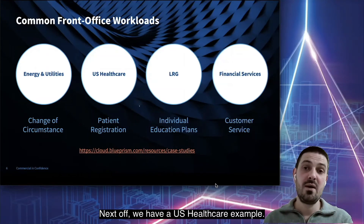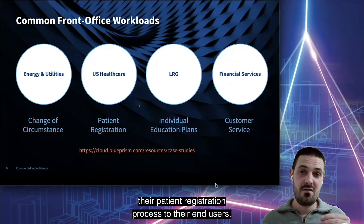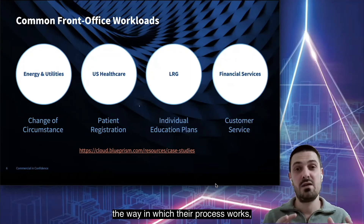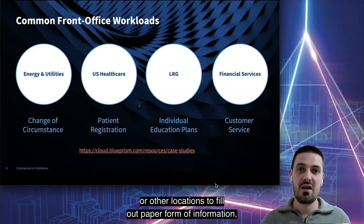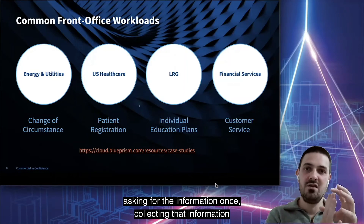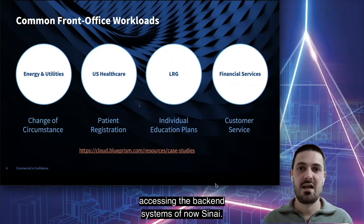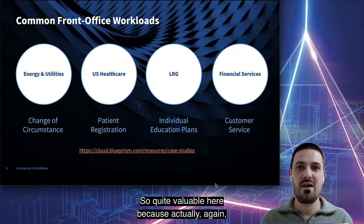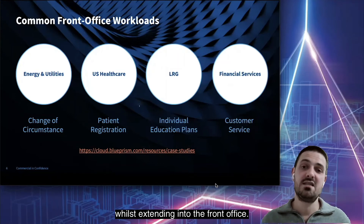Next we have a US healthcare example. For Mount Sinai, they are able to extend their patient registration process to their end users. The value here is transforming the way in which the process works — rather than an individual going into clinics or other locations to fill out a paper form, they can digitize that process, asking for the information once, collecting it, and then using the power of Blue Prism to drive that information into the process accessing Mount Sinai's back-end systems.